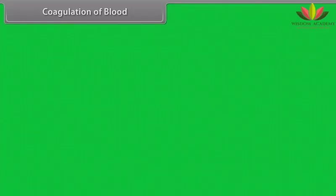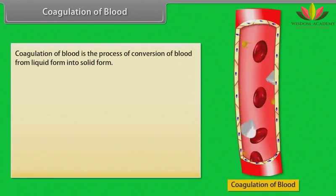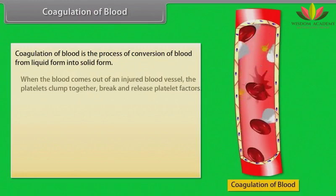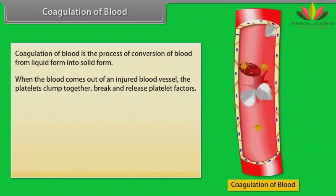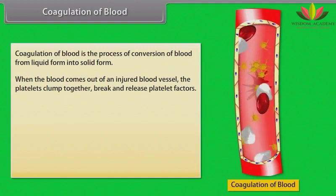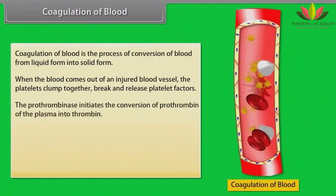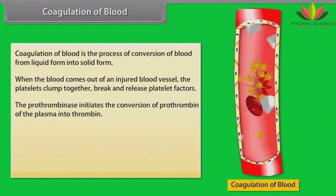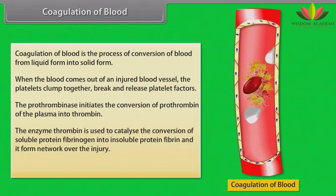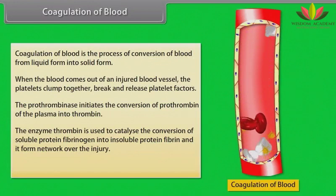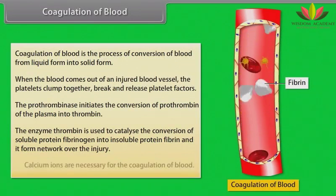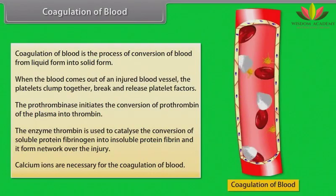Coagulation of blood is the process of conversion of blood from liquid form into solid form. When blood comes out of an injured blood vessel, platelets clump together, break, and release platelet factors. Prothrombinase initiates the conversion of prothrombin in the plasma into thrombin. The enzyme thrombin catalyzes the conversion of soluble fibrinogen into insoluble fibrin, which forms a network over the injury. Calcium ions are necessary for the coagulation of blood.